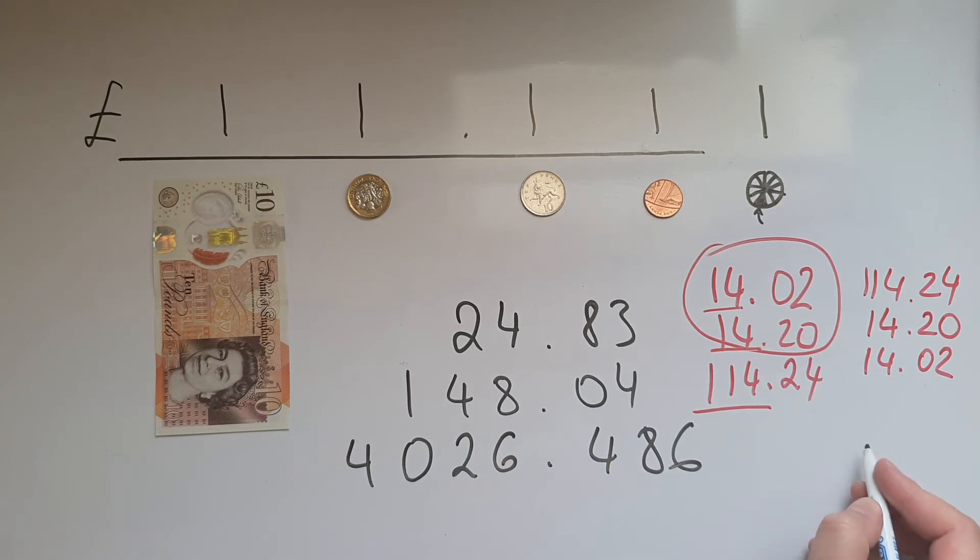So if I have just 14.2 and 14.20, are they the same or are they different? They mean exactly the same amount. When it comes to money, we always write it with two digits after the decimal point, so we can't have this like that, we need to complete it. But the value of it is identical, even if you didn't have the zero. What that means is that there are no pennies, and whether you put a zero there or you don't, it means no pennies. So it means the same thing.